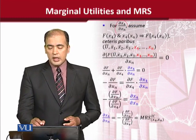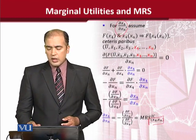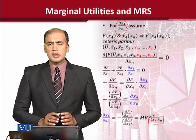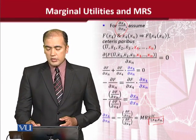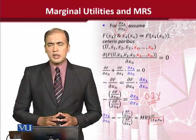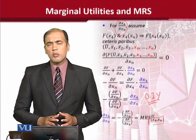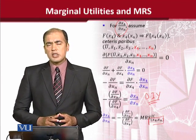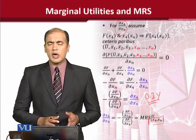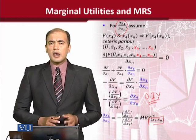You will see that another MRS is calculated, this time between x4 and xn. The process is the same, and I am leaving this for you to rehearse, as you will gain from this rehearsal. So this is how implicit differentiation can be used in utility analysis in two ways: for marginal utilities as well as for MRS.